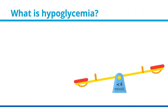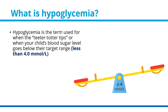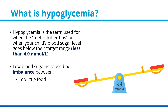What is hypoglycemia? Hypoglycemia is the term used for when the teeter-totter tips, or when your child's blood sugar level goes below their target range — when it is less than 4 millimoles per liter. Low blood sugar is caused by an imbalance between: too little food (your child may not always want to eat the same amount at each meal, may miss a snack, have a late meal, or miss a meal); too much activity (when activity exceeds what your child usually participates in); and/or too much insulin (usually from an error in type or amount given, or when the dose needs to be lowered).